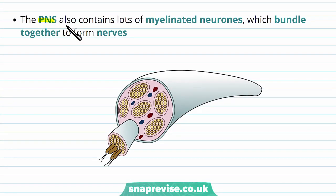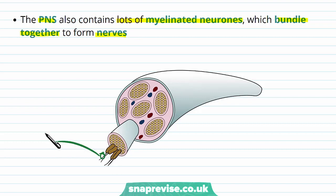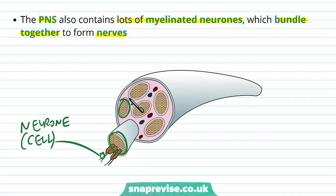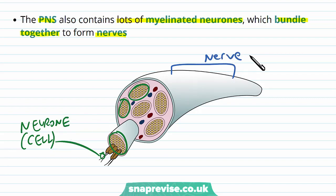The peripheral nervous system, in contrast, contains a lot of myelinated neurons and not so many unmyelinated neurons, and these bundle together into large groups to form nerves. A neuron is the individual cell, and then lots of neurons group together in multiple groups, forming an overall structure called a nerve. A nerve contains many, many neurons, and we would refer to a nerve as being a tissue.